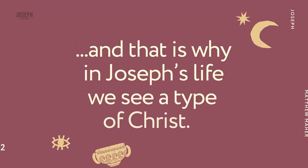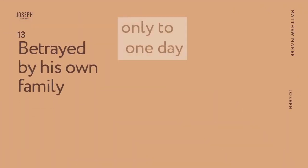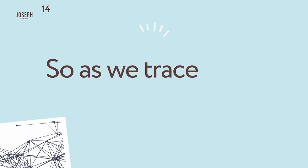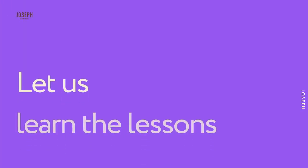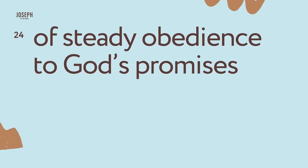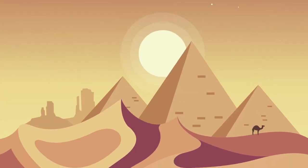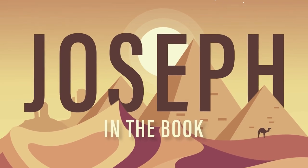That is why in Joseph's life we see a type of Christ, betrayed by his own family, only to one day be in the very position to save many. So as we trace the life of Joseph from a low pit to the high palace, let us learn the lessons and know the blessings of steady obedience to God's promises, regardless of our circumstances. This is Joseph in the book: Evil Recycled for Good.